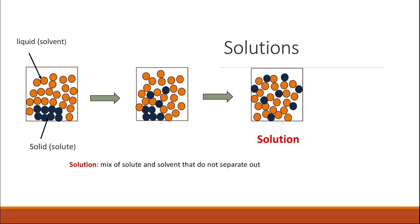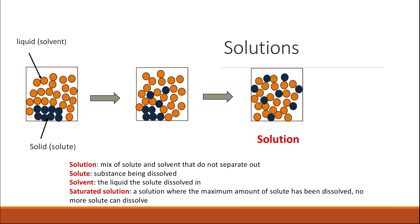There are some definitions you need to know. A solution is a mixture of a solute and a solvent that doesn't separate out — they are completely mixed. A solute is the substance that will be dissolved, and the solvent is the liquid where the solute dissolves in. There is also what is called the saturated solution. A saturated solution is a solution where the maximum amount of solute has been dissolved, so no more solute can dissolve. If you add more solute, that solid will not dissolve and will separate out or precipitate.